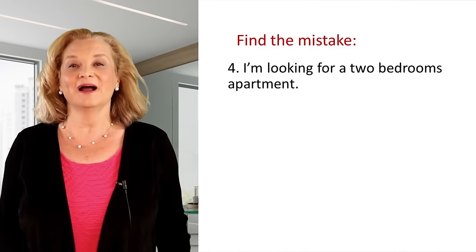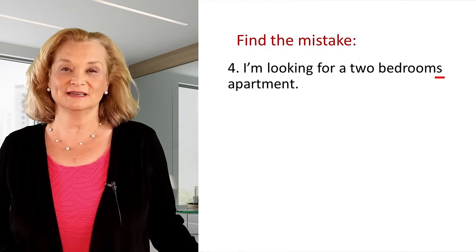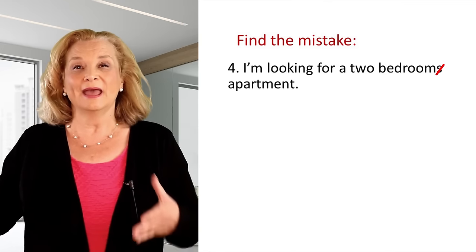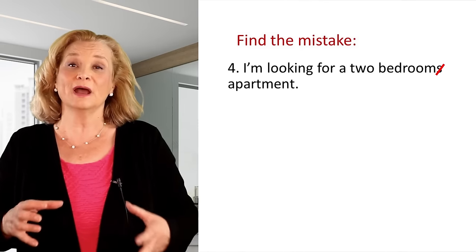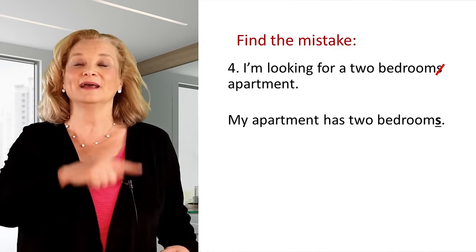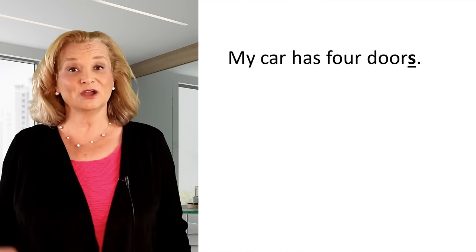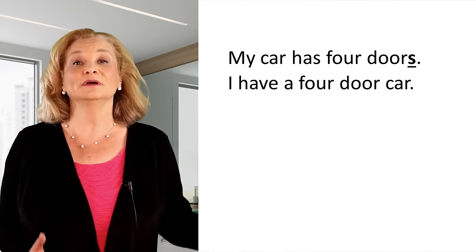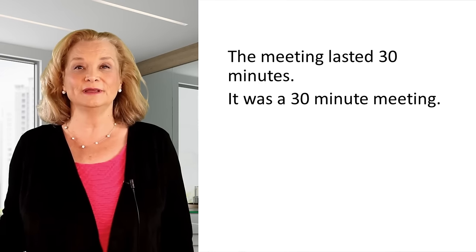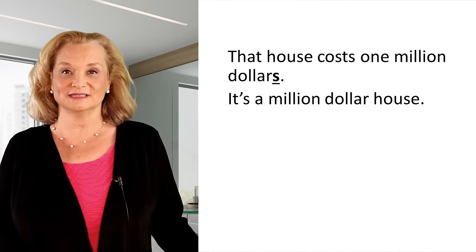Let's look at sentence number four: "I'm looking for a two bedrooms apartment." The mistake was the letter S on the word "bedrooms" — it should be "two bedroom apartment." When you put something directly in front of a noun to describe it, we change it to singular. So we say "my apartment has two bedrooms" or "I have a two bedroom apartment." My car has four doors, or I have a four door car — no S. The meeting lasted 30 minutes; it was a 30 minute meeting. That house cost a million dollars; it's a million dollar house. Do you see that pattern?